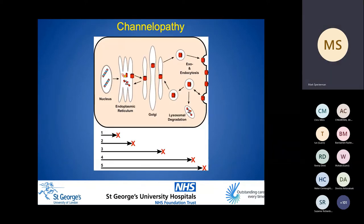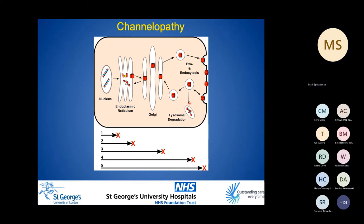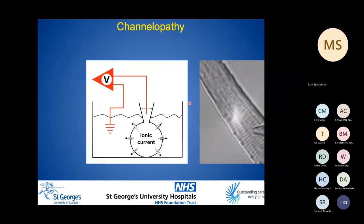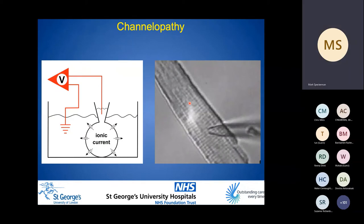Channelopathy can occur where variants lead to disturbances at any stage of transcription, translation, packaging, and trafficking to the cell membrane, or in the functioning and gating of the ion channel at the cell membrane. The mechanism of a variant can be explored at all of these stages by various techniques including RNA expression, immunocytochemistry, calcium imaging, and patch clamp. Patch clamp involves lowering very fine pipettes under microscopy down onto an isolated cell surface and measuring ionic currents from those cells.